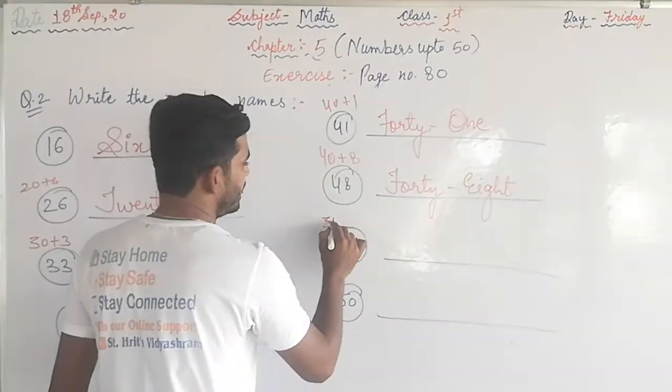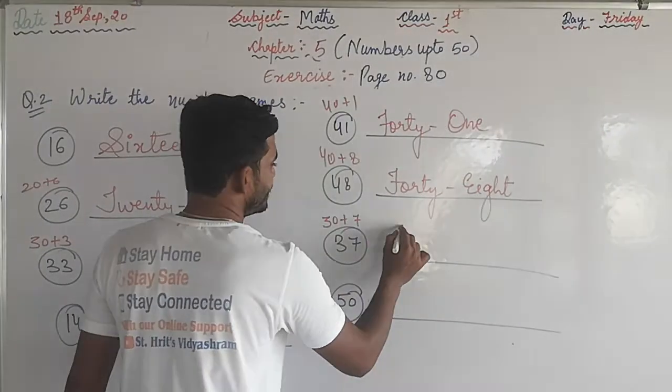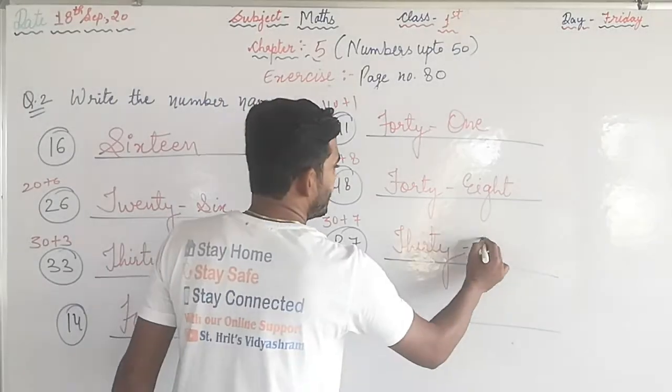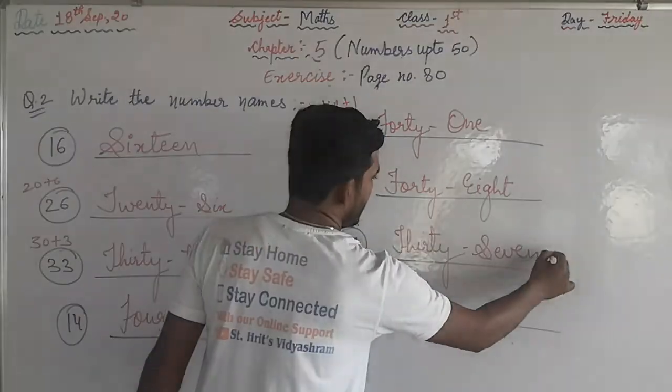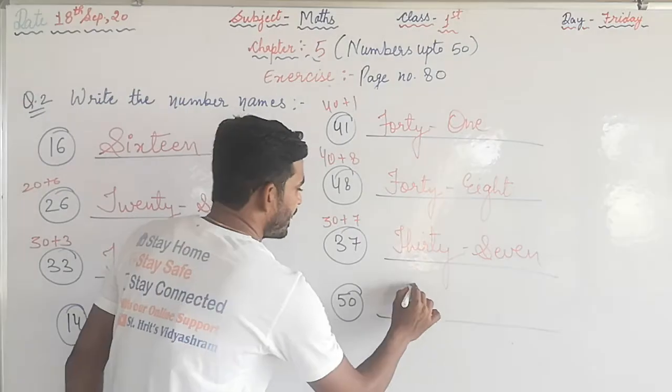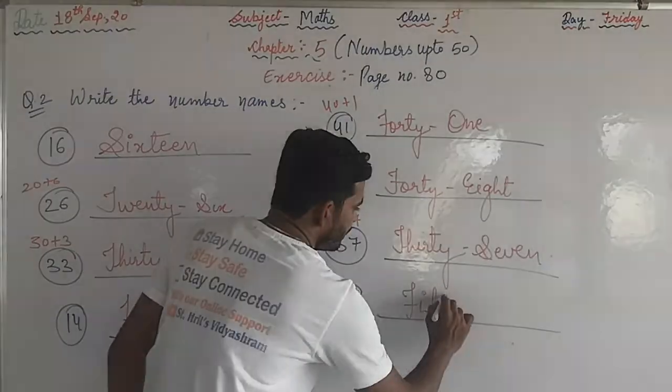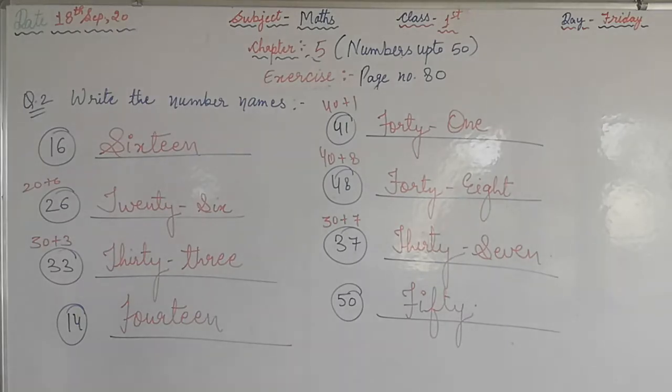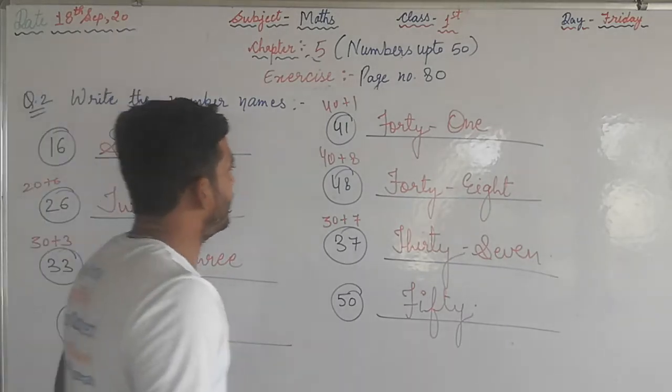48: 40 plus 8. 40 is f-o-r-t-y, and 8 is e-i-g-h-t. 37: 30 plus 7. Write the spelling of 30, that is t-h-i-r-t-y, and 7 is s-e-v-e-n. 50: f-i-f-t-y. So this question also you have to do in rough notebook.